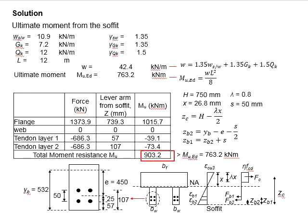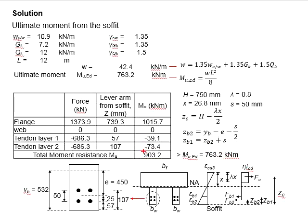This represents the total moment resistance of the member generated by the tendon itself. Comparing the moment resistance with the moment load, the moment resistance of 903.2 kNm is greater than the moment load of 763.2 kNm. That means this section is safe at the ultimate limit state under flexural bending. In this case, no additional reinforcement bar is required. However, if the ultimate resistance were smaller than the moment load, additional non-prestressing reinforcement would be required, and you would need to recompute the tensile stress in the steel and tendon to find the new moment resistance.